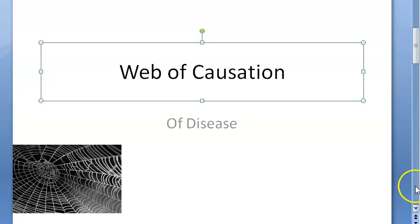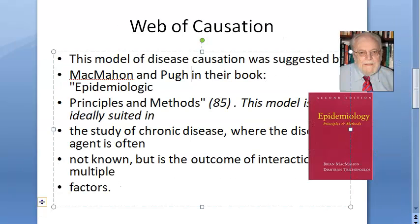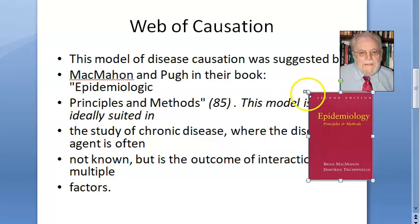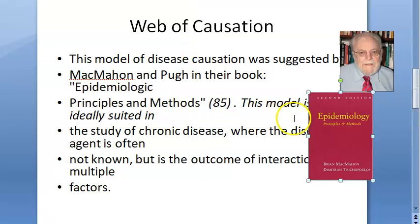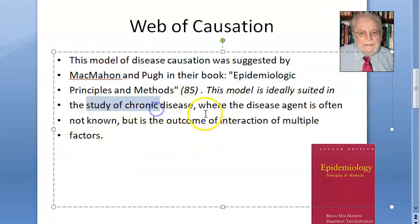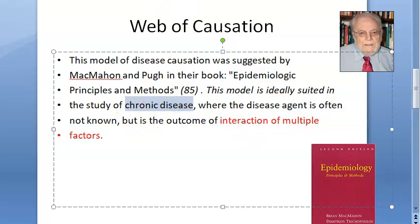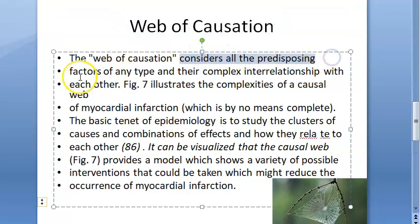This was suggested by McMahon and Pugh in their book called 'Epidemiology: Principles and Methods.' They mention this model is suited for chronic diseases, involving the interaction of multiple factors. The web of causation considers all predisposing factors of any type and their complex interrelationships — like obesity leading to hypertension.